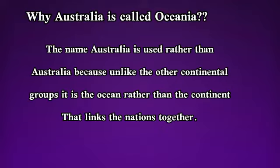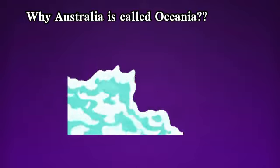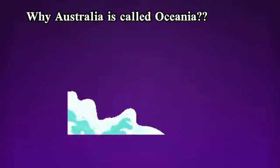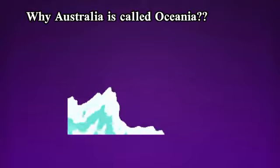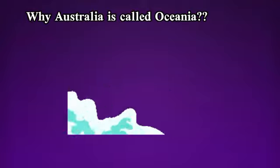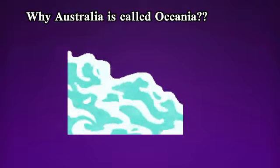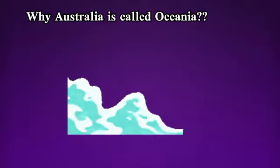Oceania کا نام Australia کی بجائے اس لئے استعمال کیا جاتا ہے، کیونکہ دیگر continental groups جیسے Asia، Europe، Africa میں nations جیوگرافیکلی ایک دوسرے سے لینک ہیں، جبکہ اس region میں سمندر ہے جو اقوام کو آپس میں جوڑتا ہے۔ Oceania region میں ocean اقوام کو ایک دوسرے سے جوڑتا ہے۔